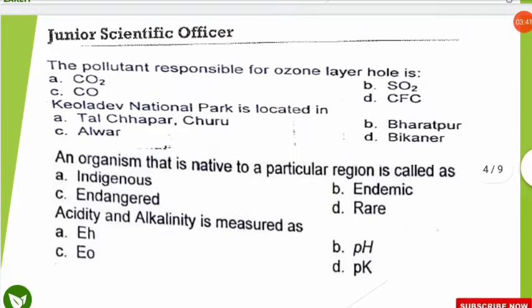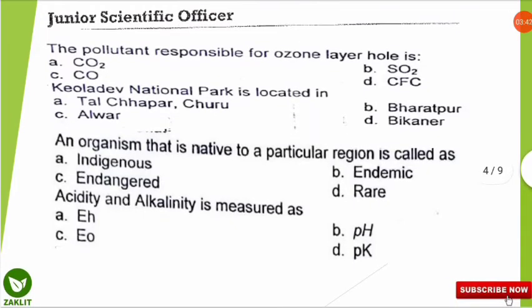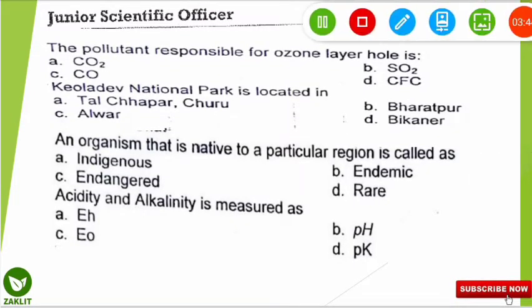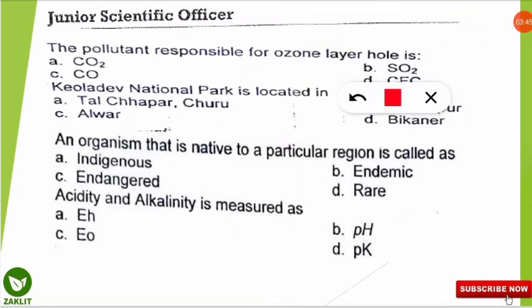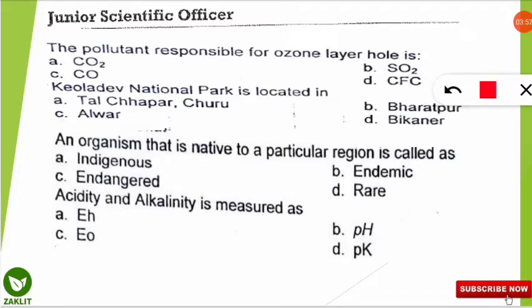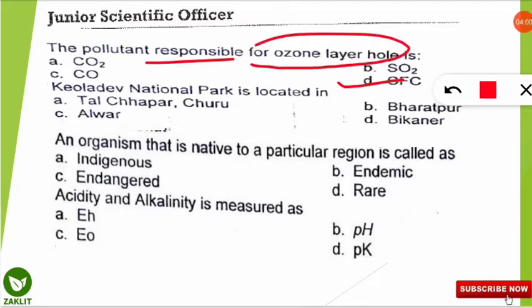The next question: the pollutant responsible for the ozone layer hole is which one? This kind of simple question is also asked — we know this from school days. The correct option is D — CFCs are the major pollutant responsible for the ozone layer hole, or ozone layer depletion.